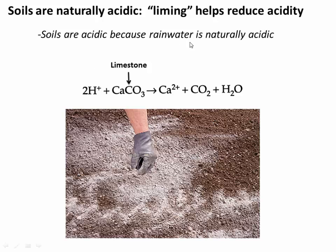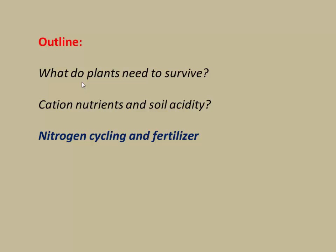How can we combat soil acidity? Soil acidity is a natural phenomenon — rainwater is naturally acidic due to carbonic acid. One way to combat this is liming: placing a base material, in this case calcium carbonate, in the soil. This is literally crushed limestone spread on a field. It reacts with the hydrogen, creating a calcium ion, carbon dioxide, and water — consuming those H+ ions, raising the soil pH, making it less acidic and a better environment for plants.